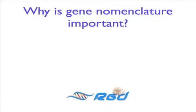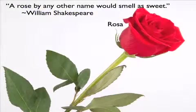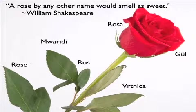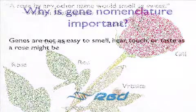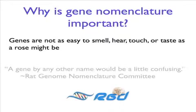So why is gene nomenclature so important? Consider the Shakespearean quote: 'That which we call a rose by any other name would smell as sweet.' That sentiment relies on the sense of smell to correct for any error in naming the object in question. Genes identified in the biomedical literature are not always accompanied by data that corroborates the gene's identity, so accurate nomenclature is important for proper communication.